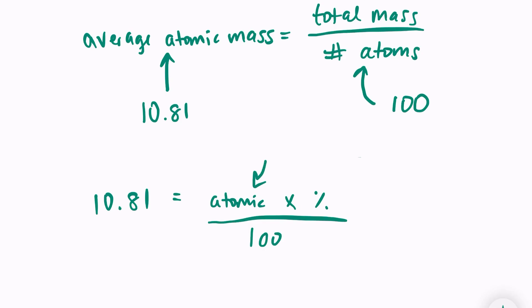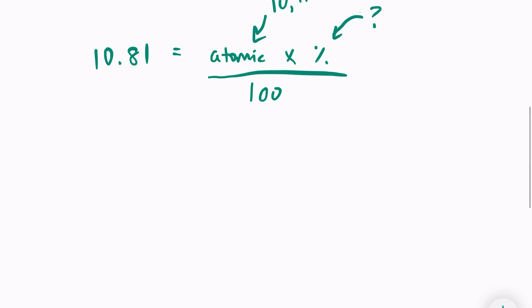I already know that the atomic masses I'm working with are 10 and 11. I just don't know what the percentage is, so I'm only solving for one variable, which is great. That means that I can introduce the variable of x.